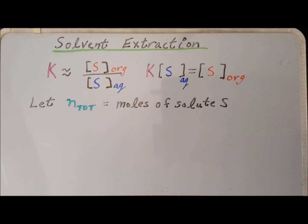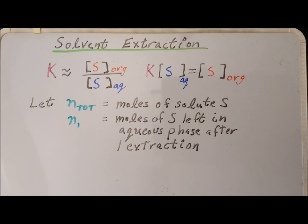Let us define a couple of variables. One of them is going to be N_tot, which is the total number of moles of solute S, no matter which phase it might be in. Then N_1 are the moles of S, the solute, that are left in the aqueous phase after we have done one extraction. So the 1 as a subscript refers to the fact that we've done one extraction step.